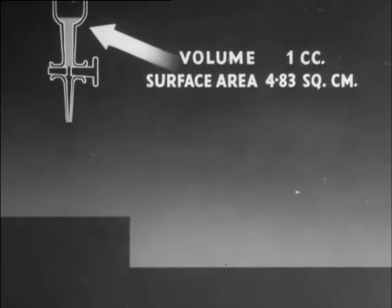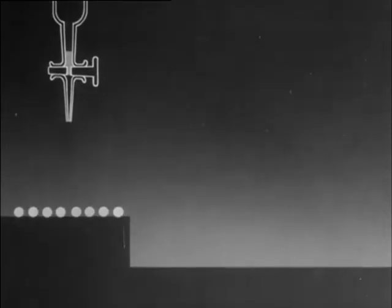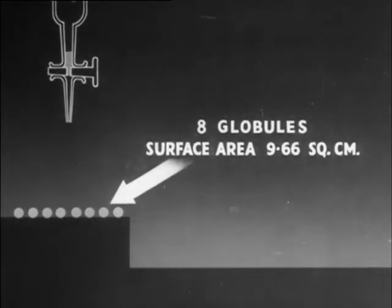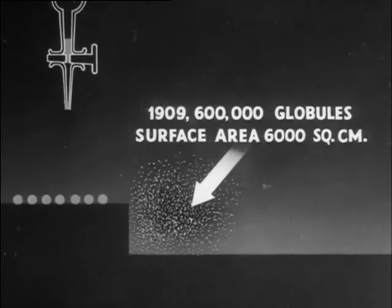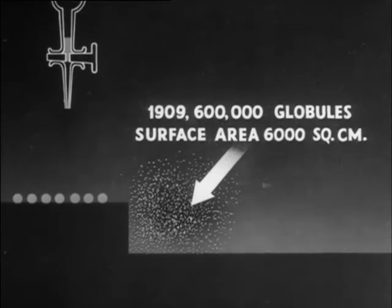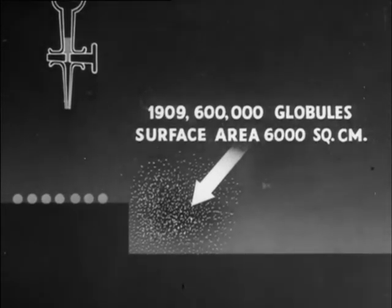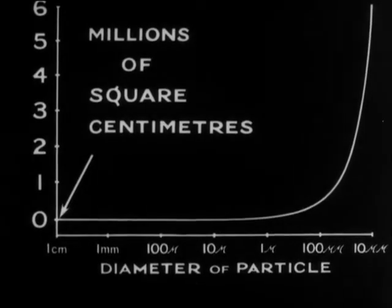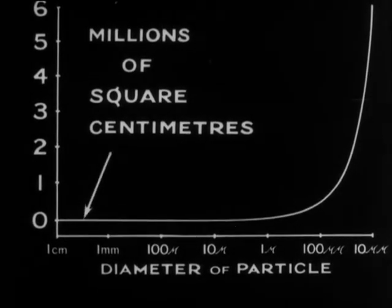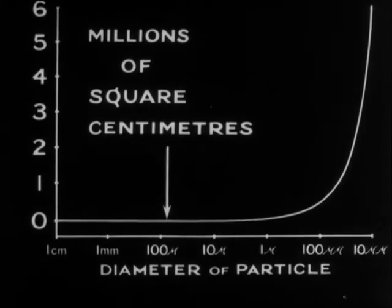The breaking up of a volume of oil into millions of little globules means that the surface area is enormously increased. Every time a globule breaks up into eight smaller ones, the surface area is doubled. When the number of droplets becomes nearly two thousand million, the total surface area becomes six thousand square centimeters, or one thousand two hundred and forty two times the original. This graph shows how the surface area increases with decreasing diameter of droplet.